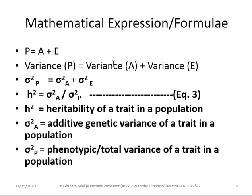Taking variances of this equation: variance of phenotype equals variance of additive genes plus variance of environment, written as σ²p = σ²a + σ²e. Heritability is therefore σ²a divided by σ²p — that is, additive genetic variance divided by phenotypic variance. Here h² is the heritability of a trait in a population, σ²a is the additive genetic variance, and σ²p is the total phenotypic variance, estimated through specialized procedures.